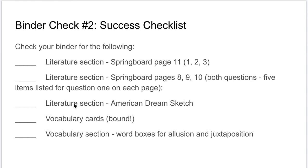In the literature section, you need to place your American dream sketch. Vocabulary cards must be bound, not with a paperclip. Binder check number two includes your vocabulary cards being bound. If they are not bound, your binder check will be incomplete.